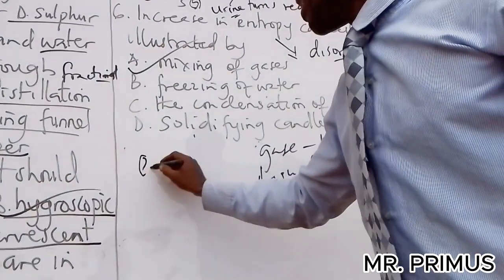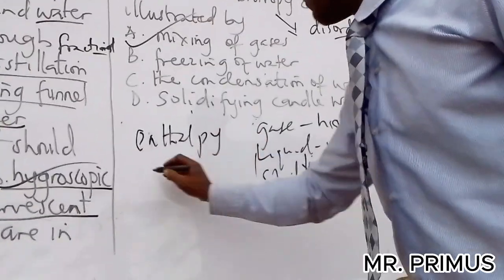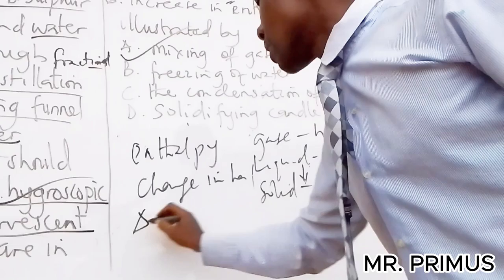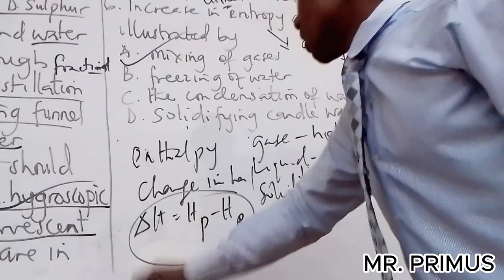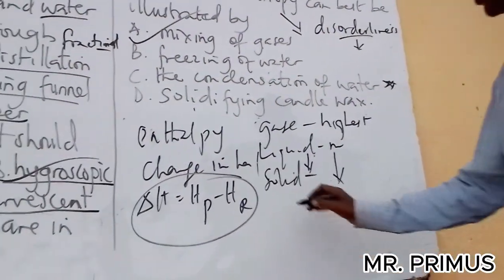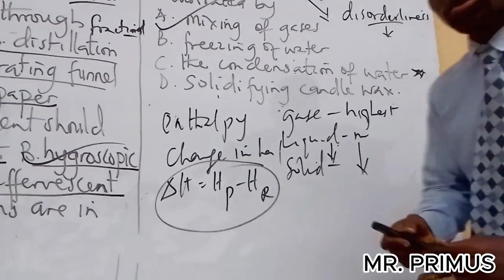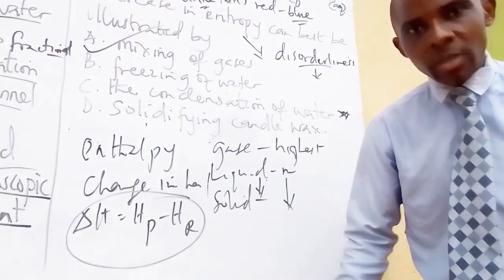We have talked about enthalpy. Enthalpy means change in heat. That is, enthalpy is heat of products minus heat of reactants. Then free energy is energy available. There are many other ones, please go ahead and read them. And I wish you good luck in all the exams. Mr. Primus says you'll surely make it.